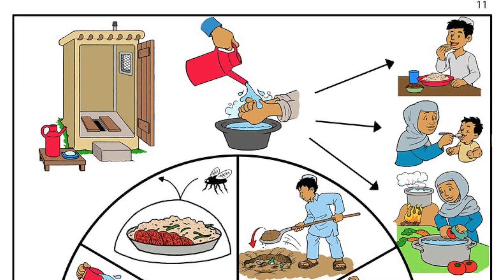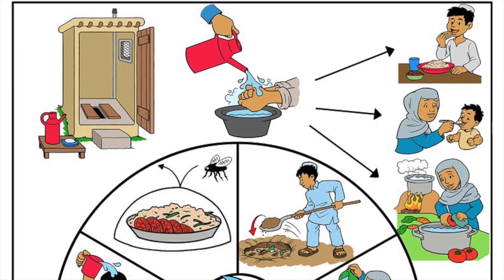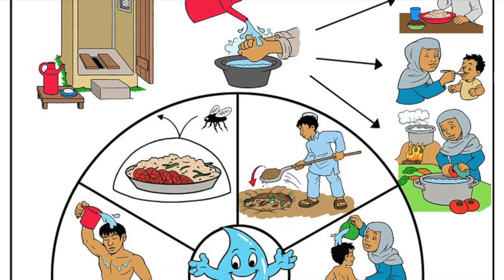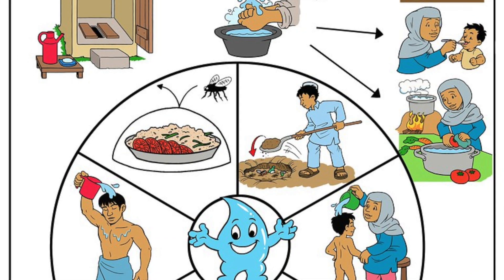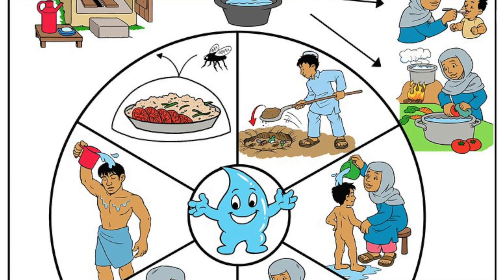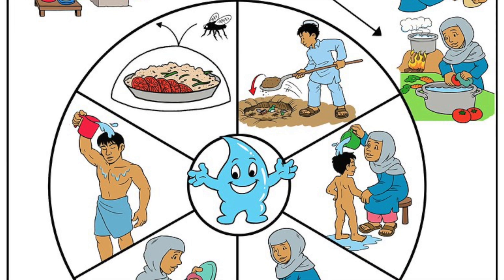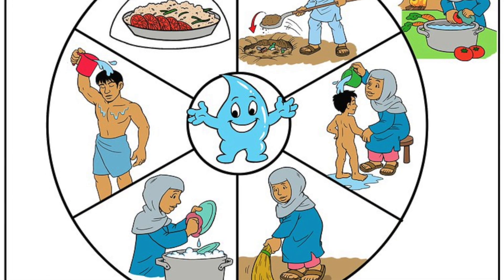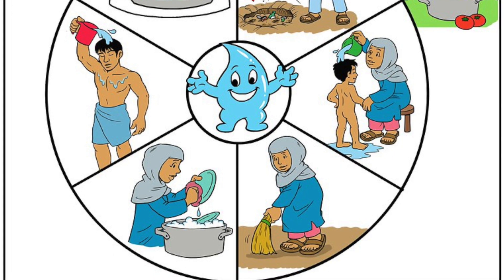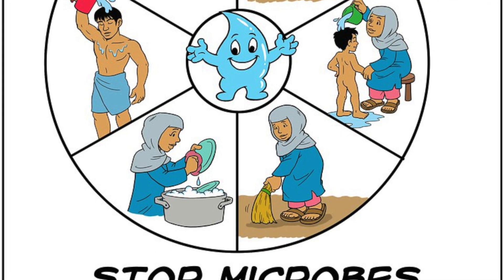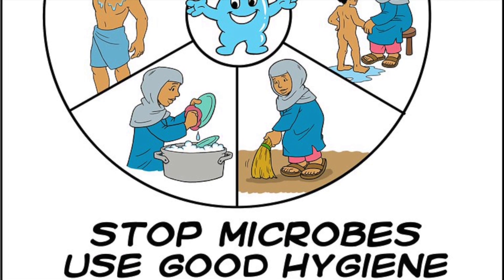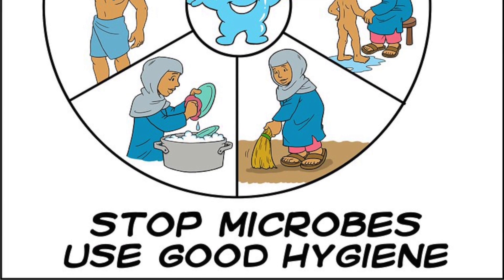We now know there are many ways to prevent the spread of disease, and one of the most important is hygiene. Hygiene measures include hand washing — especially after using the toilet or before cooking — using disinfectants on kitchen surfaces, coughing or sneezing into a handkerchief, and keeping raw meat away from food that is ready to eat.